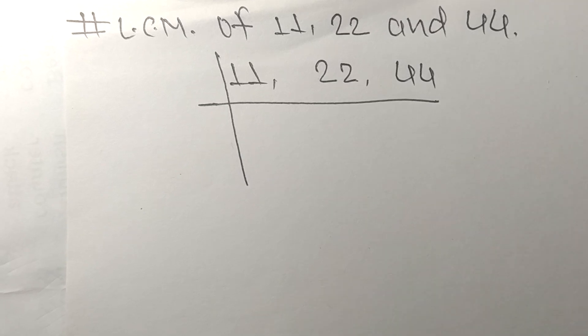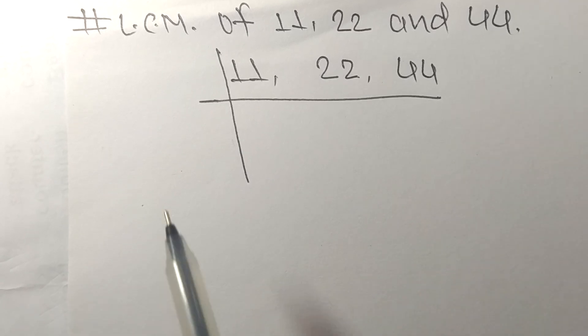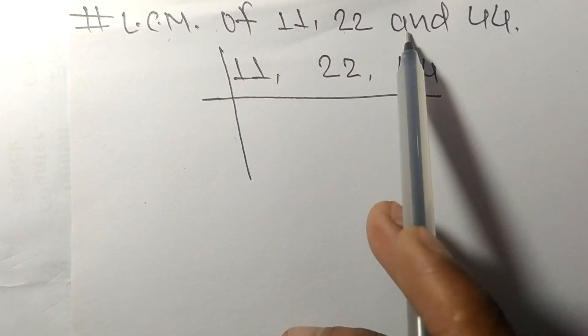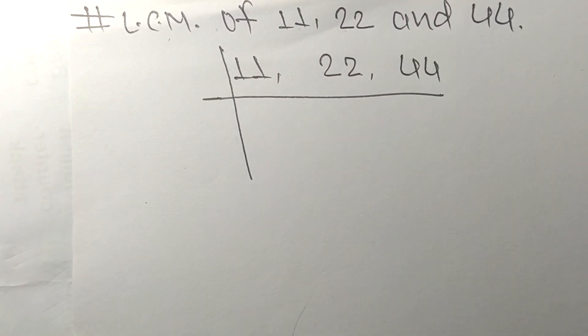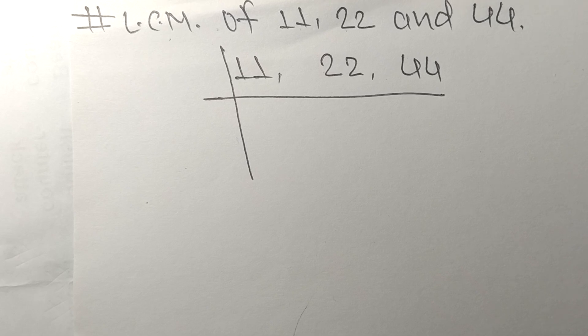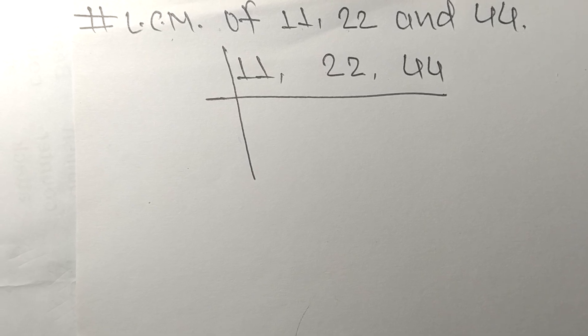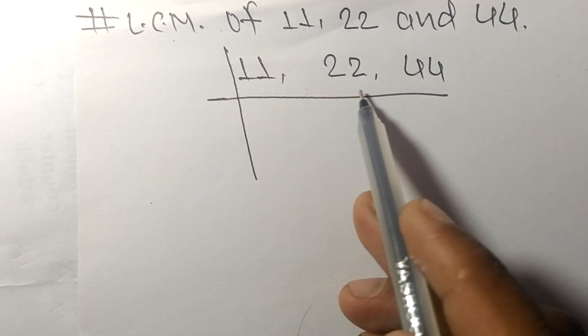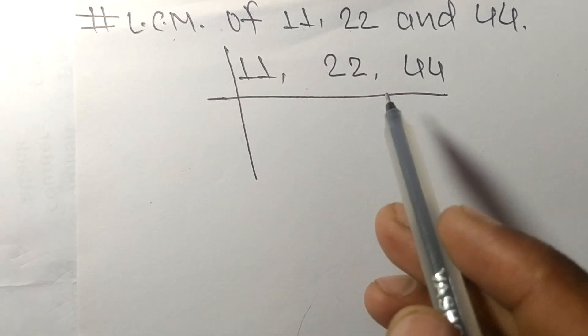So today in this video we shall learn to find the LCM of 11, 22, and 44. To find LCM, we have to choose the lowest number that can exactly divide at least any two of these numbers.